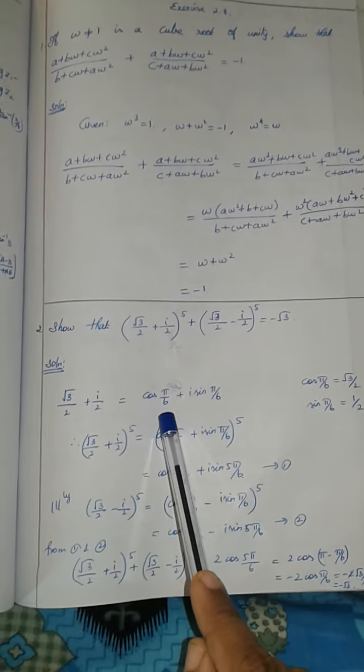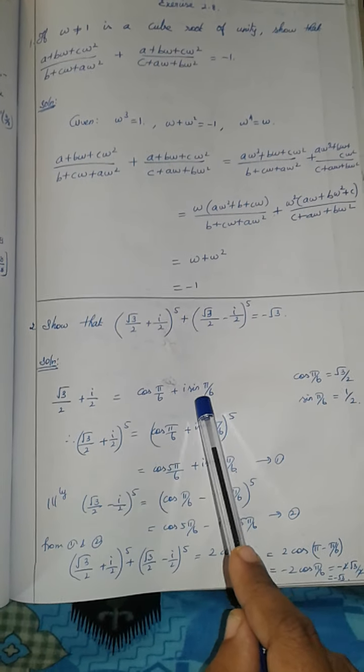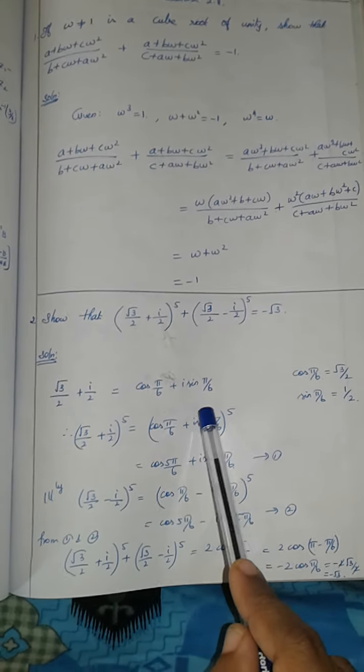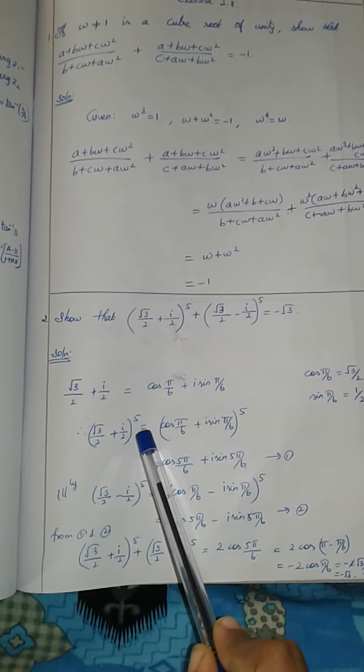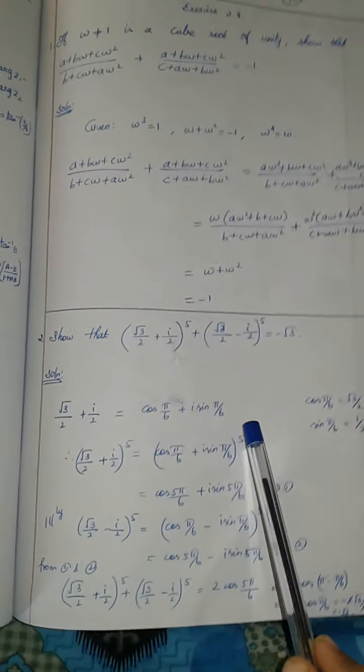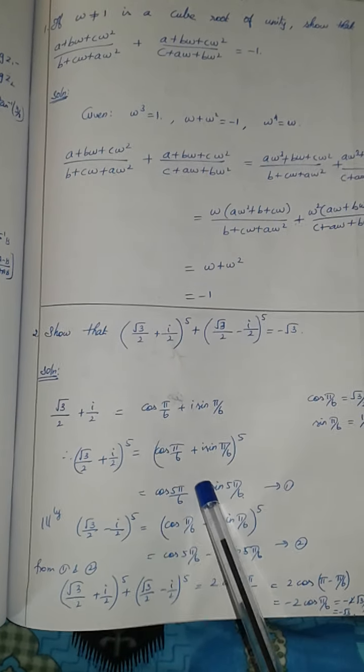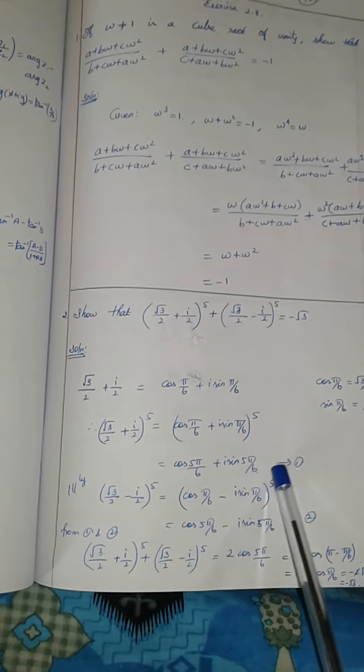We have minus root 3 by 2 plus i times 1 by 2, which is cos 5 pi by 6 and sin 5 pi by 6 values using polar formula. This equals cos 5 pi by 6 plus i sin 5 pi by 6 to the power 5. That means cos 5 pi by 6 plus i sin 5 pi by 6. This is equation number 1.